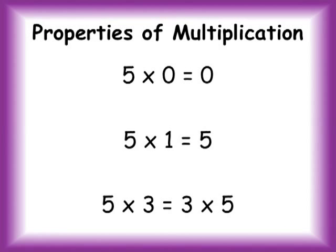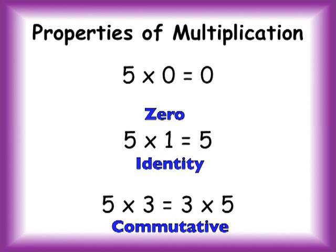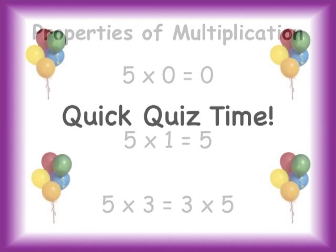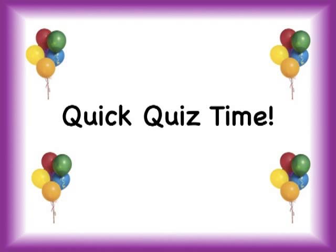Congratulations on learning these three properties of multiplication. Remember, use the zero property, the identity property, and the commutative property to help you multiply quickly. Quick quiz time. See how much faster you can multiply now.